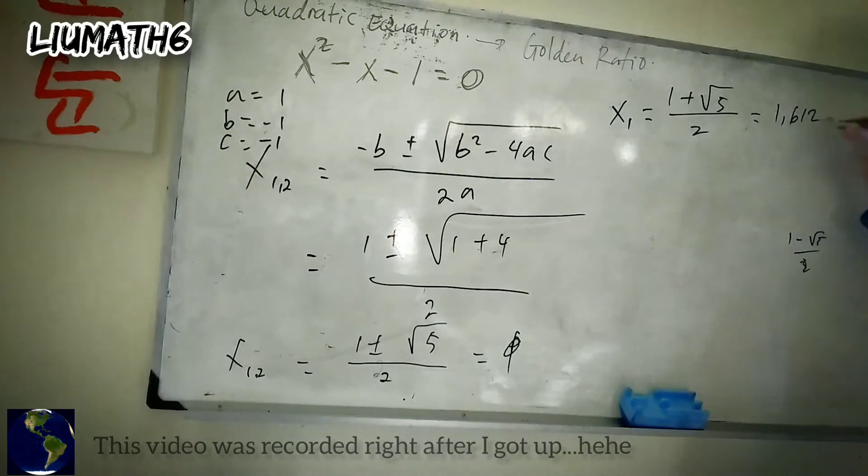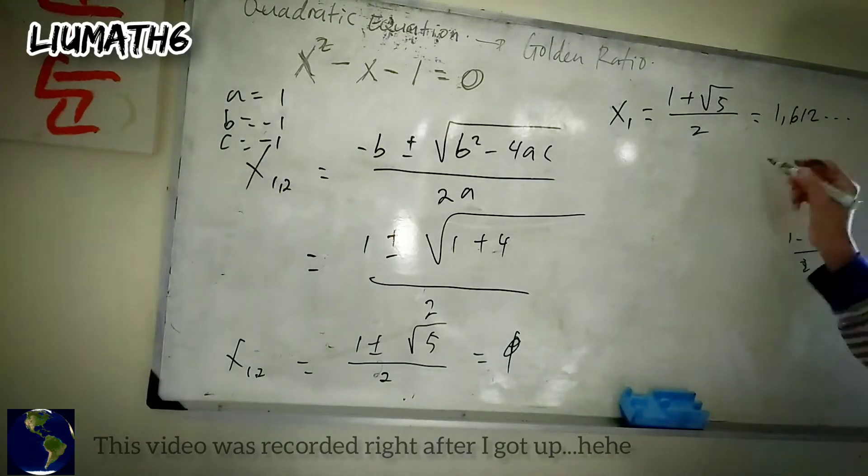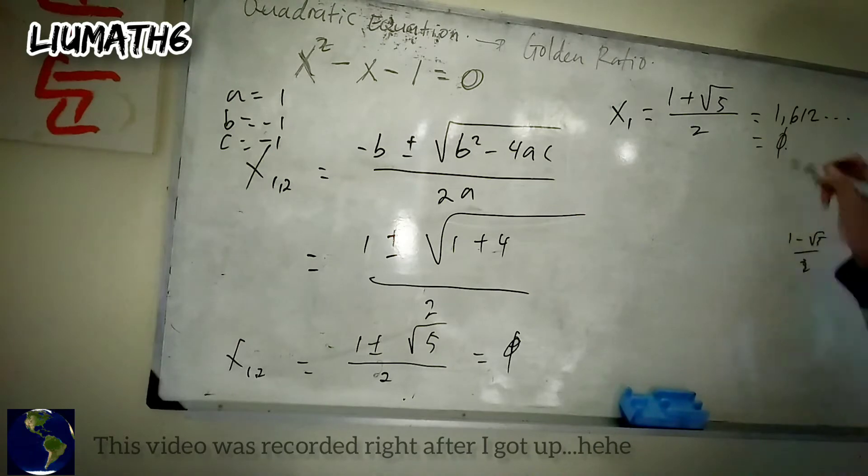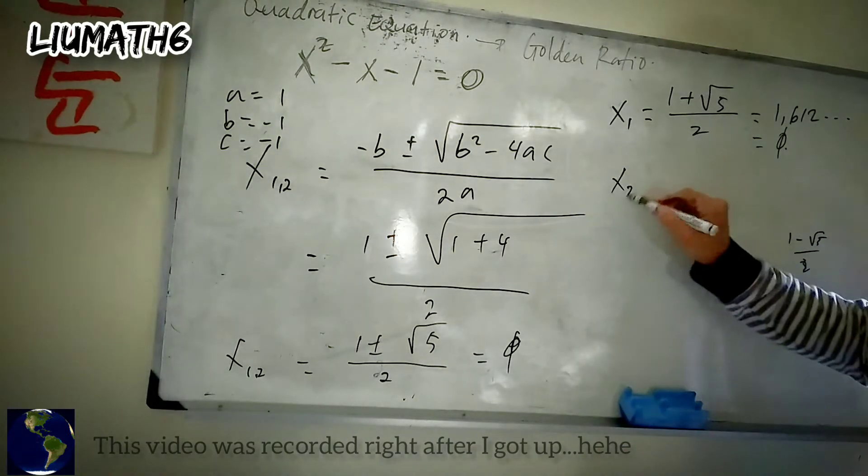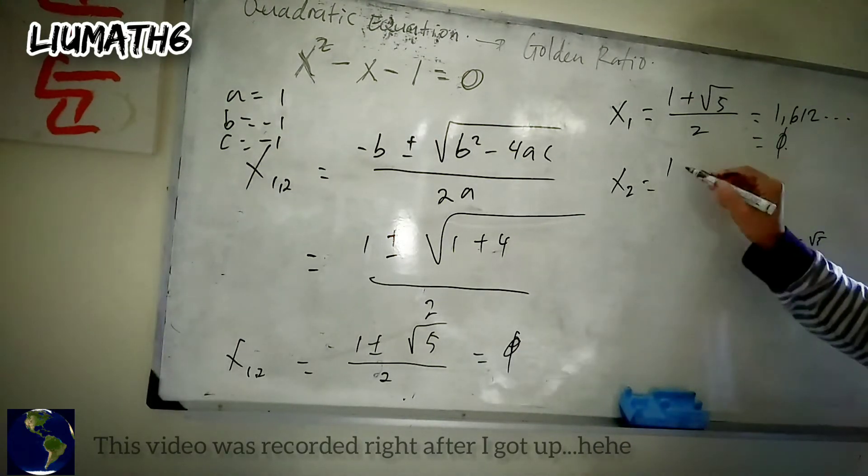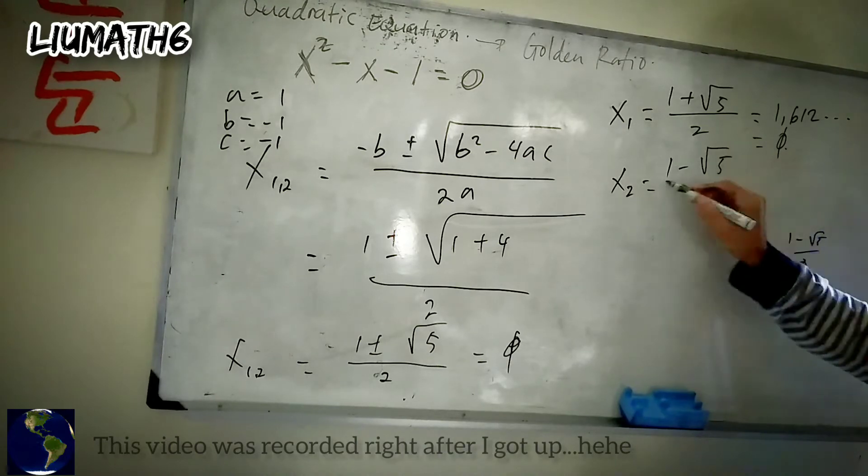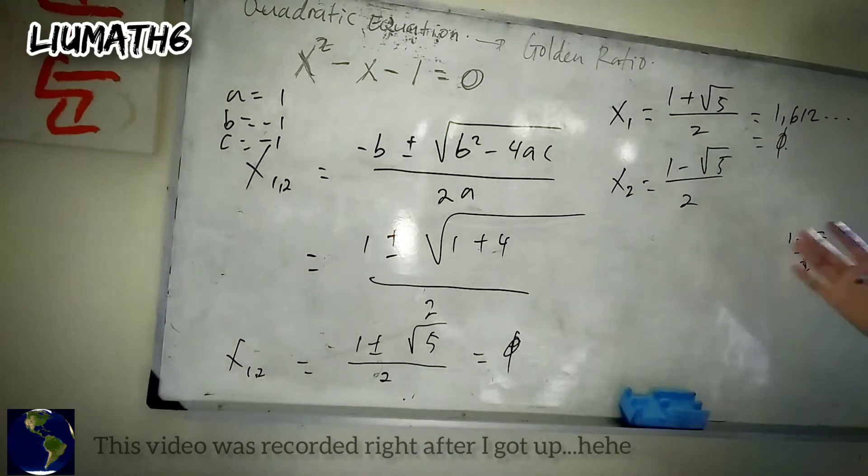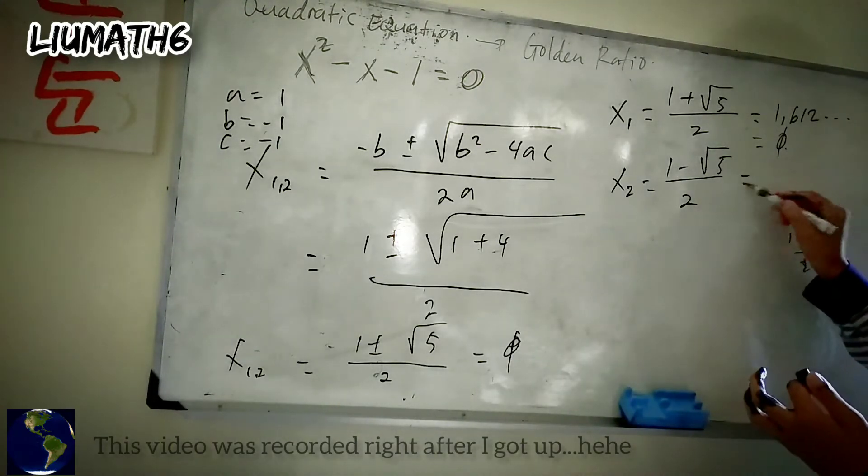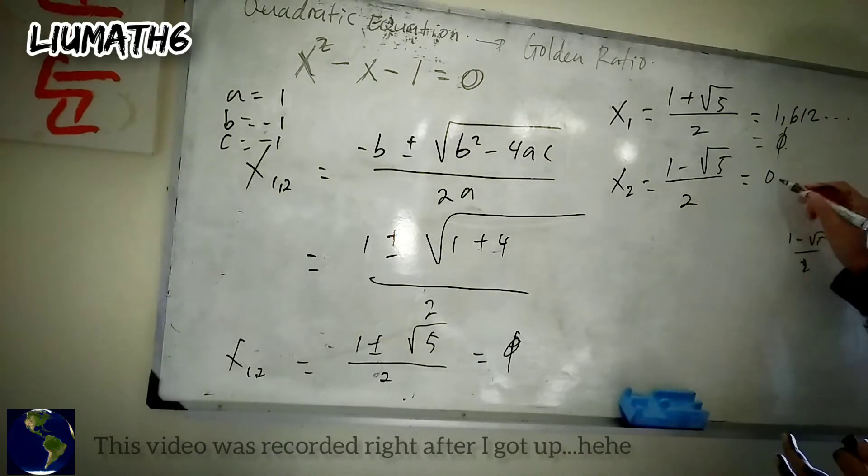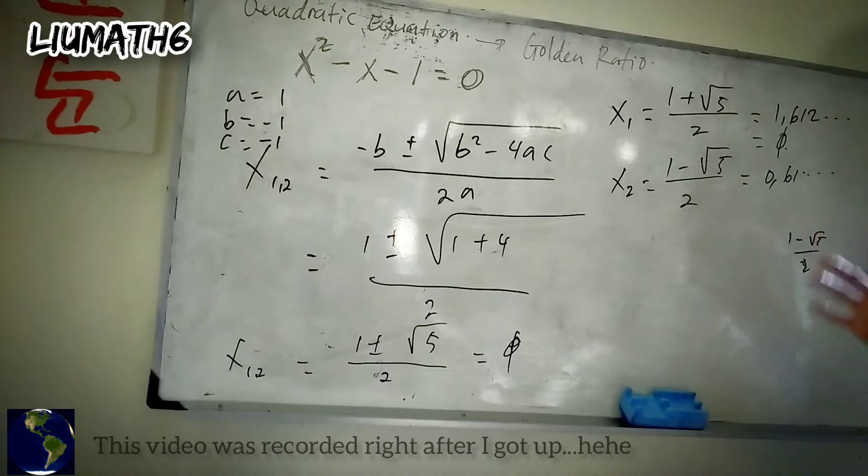Now what about the negative? All right, let's take the negative: 1 minus square root of 5, all over 2. And this is also the golden ratio, which has the value of 0.61... like this. So yeah, as you know, this is also the golden ratio, right?